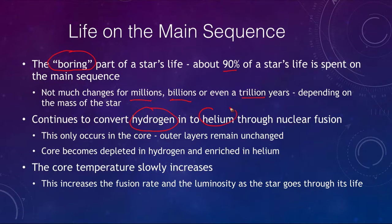The star is simply converting hydrogen into helium in its core. And as long as it has that supply of hydrogen, it is able to continue this process. This is only going on in the core, so the outer layers are unchanged. The core is becoming depleted in hydrogen and enriched in helium, but this does not change what we see in the star itself.